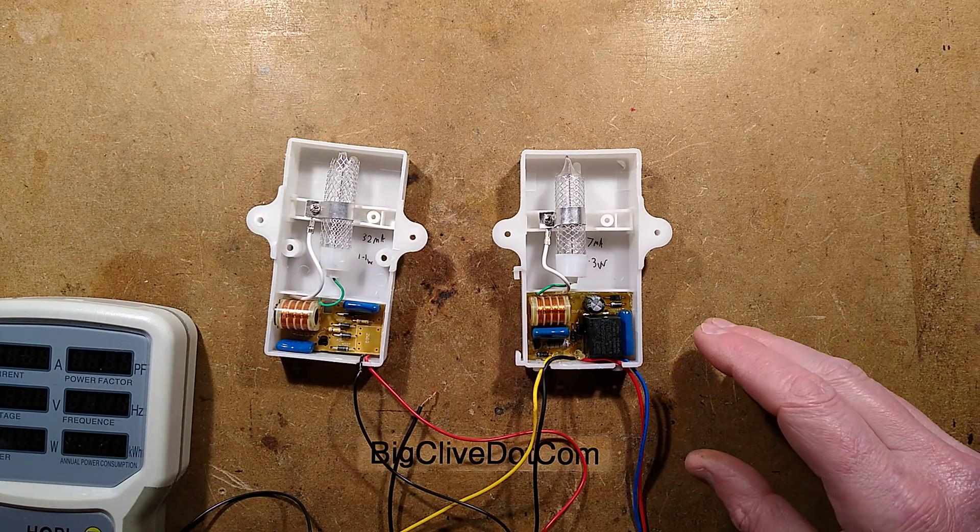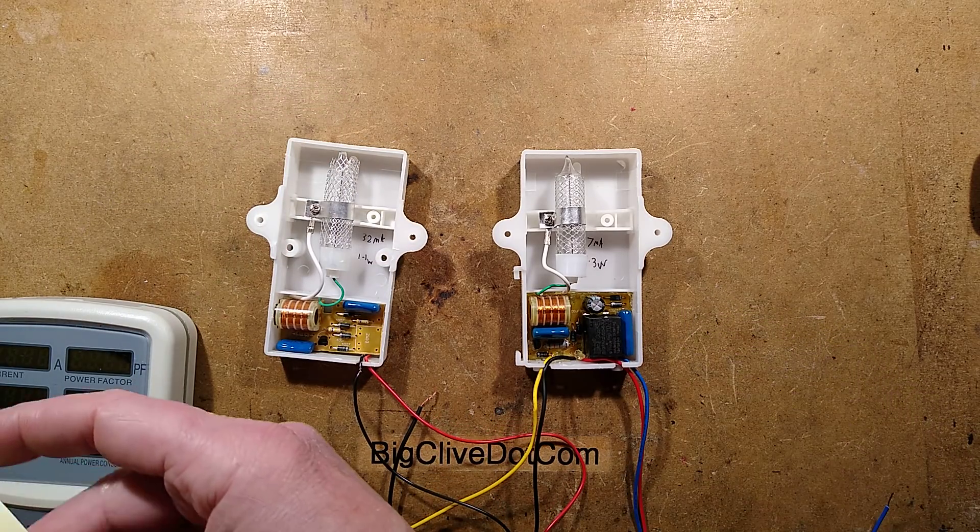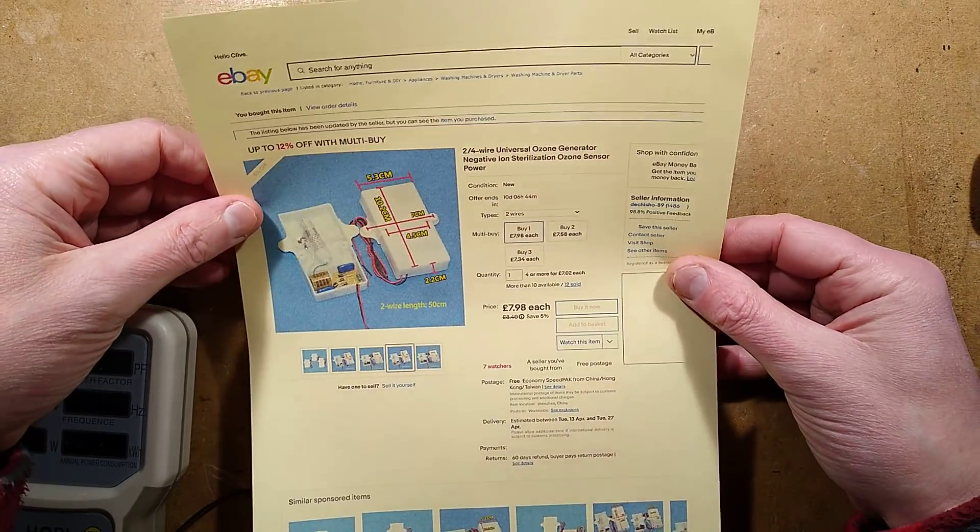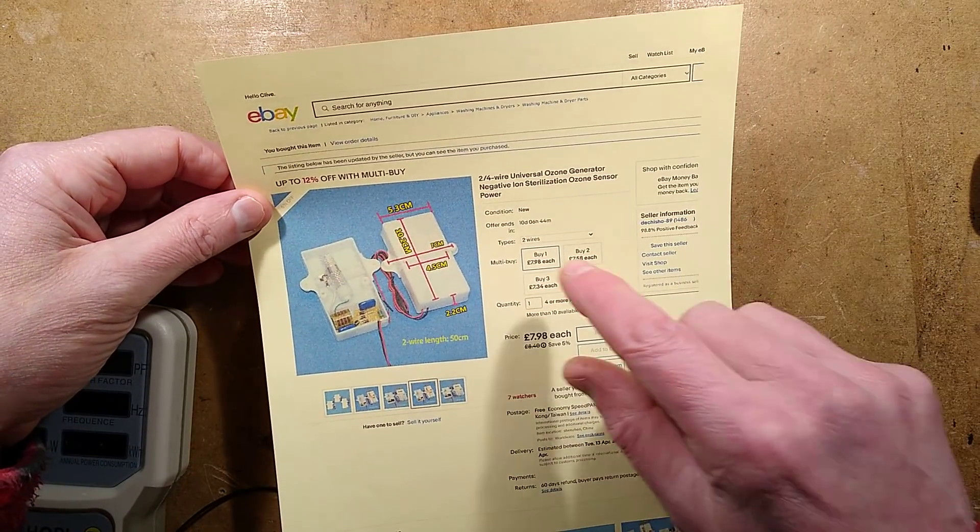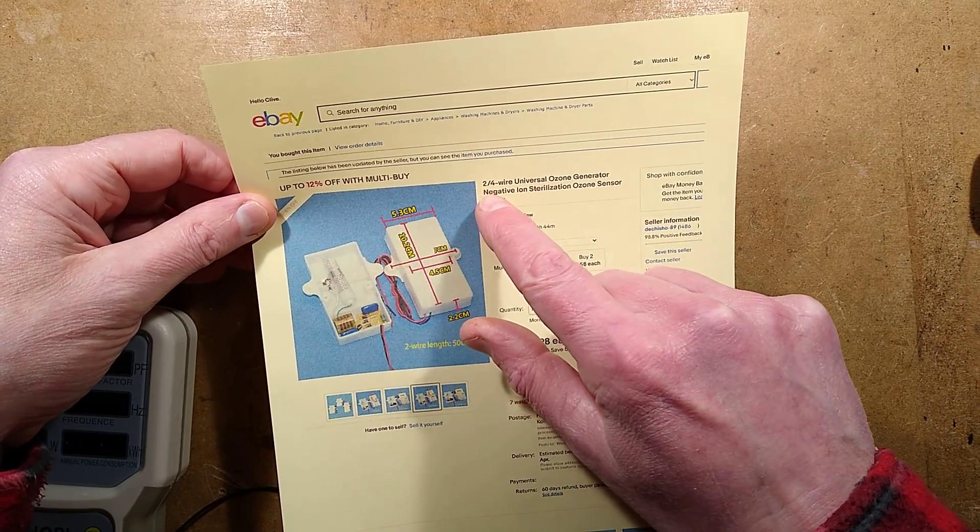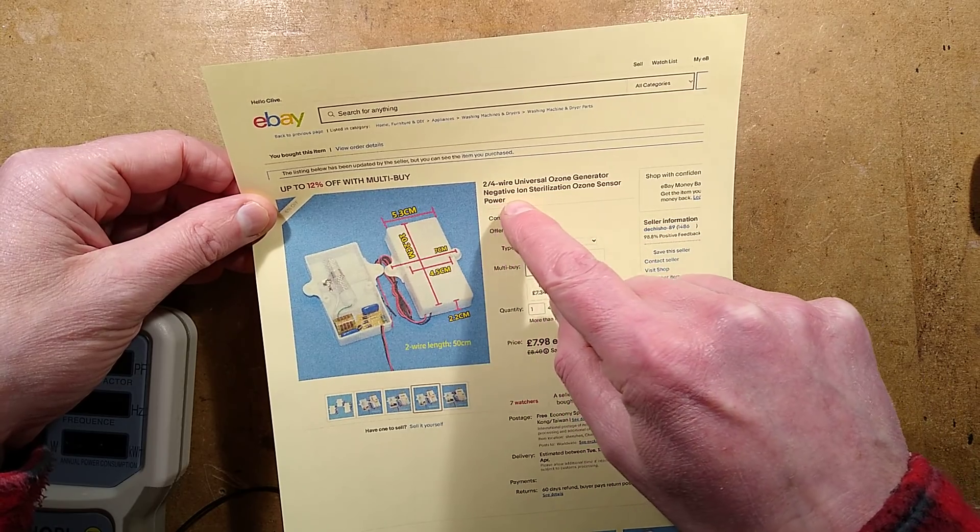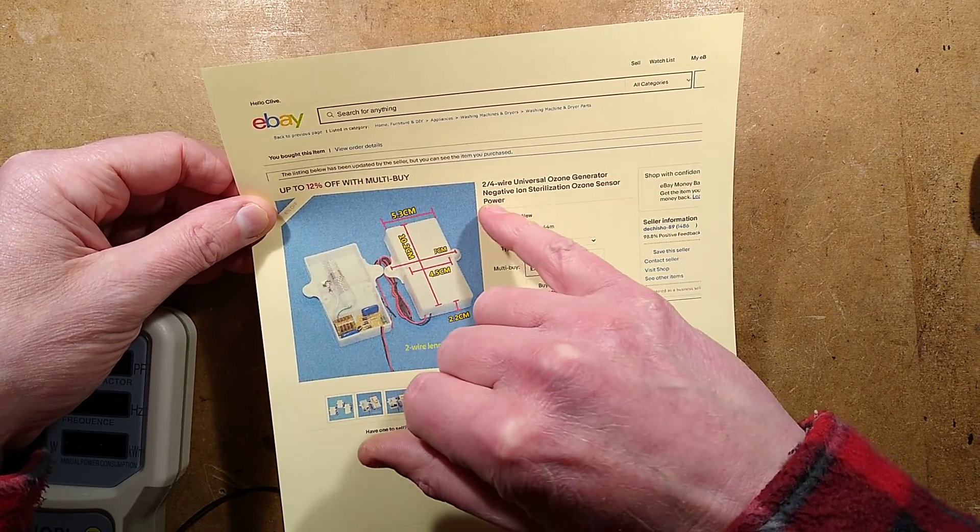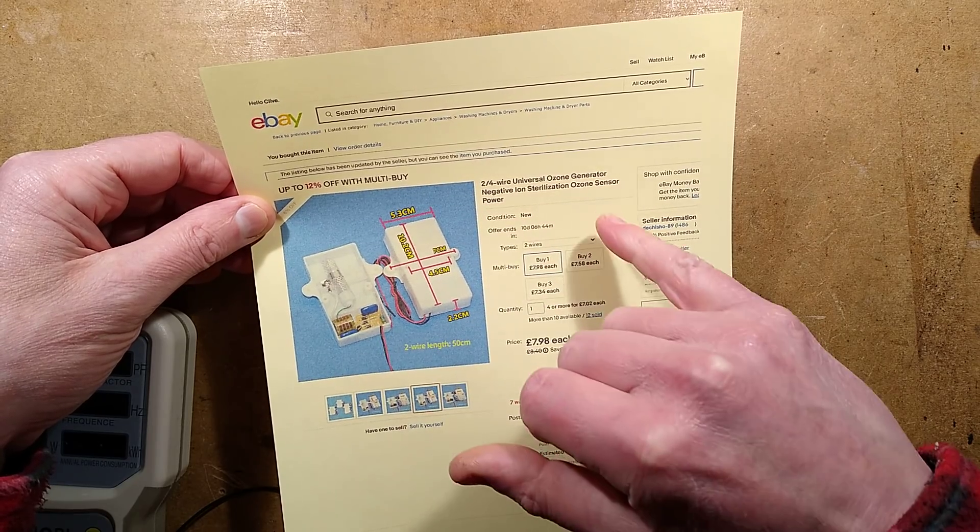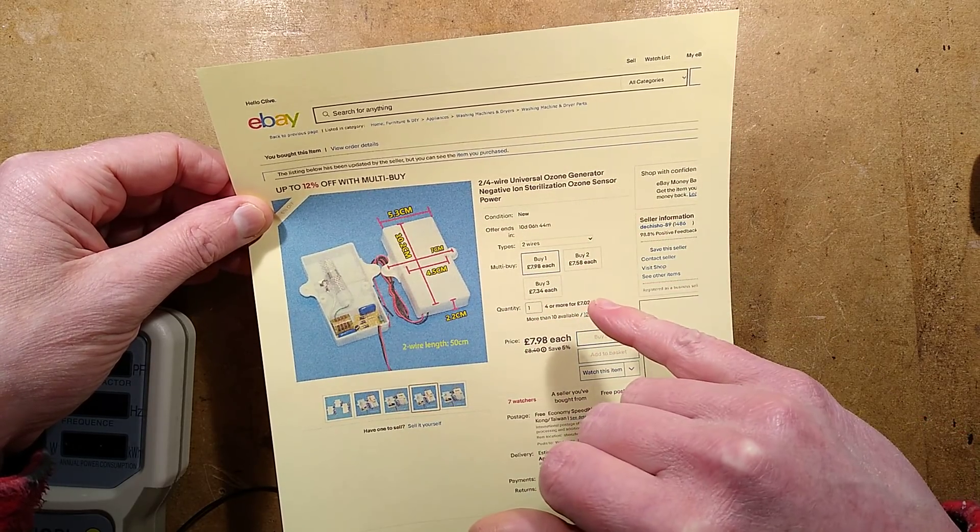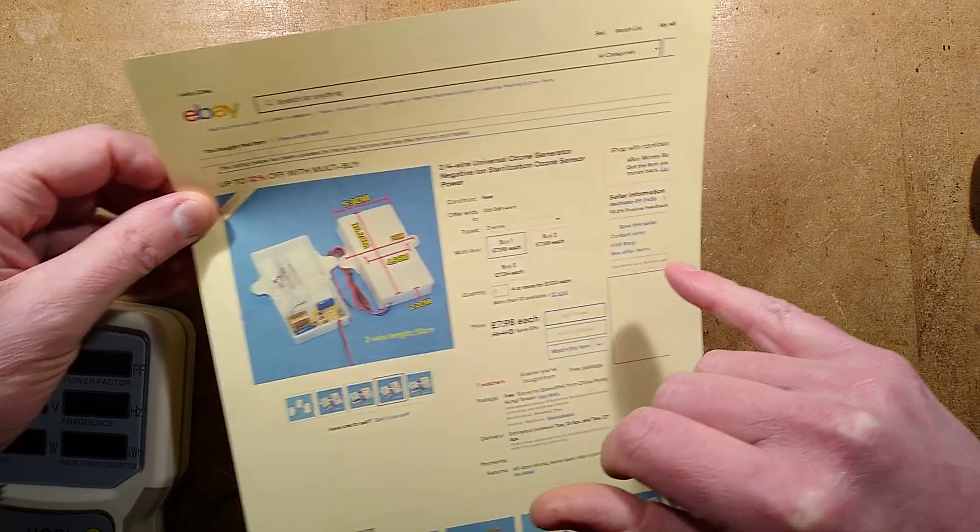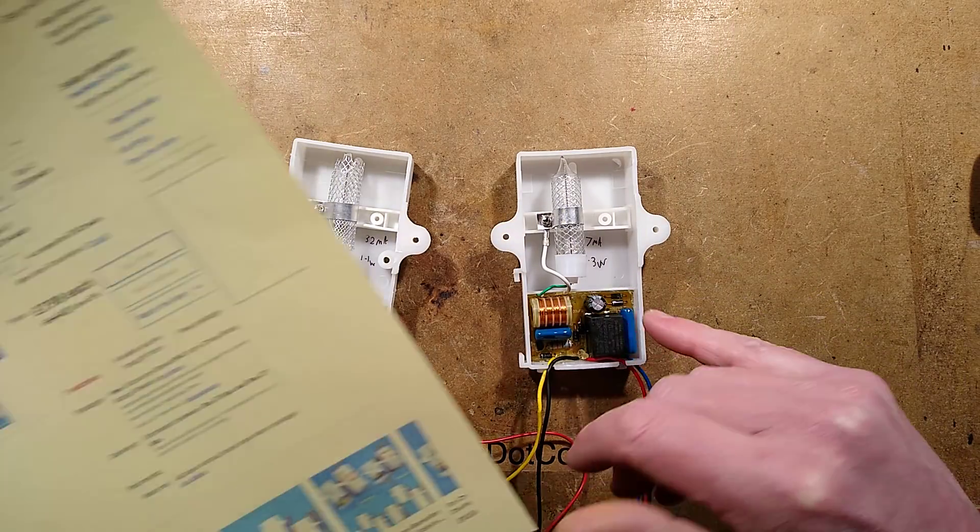It turns out that these may actually be for sterilizing chopsticks, so a very Chinese type of thing. The listing usually says something like two four-wire universal ozone generator negative ion sterilization ozone sensor power. It's nothing to do with negative ions and the sensor I'm not even sure what that's to do with, although having said that this one does have a safety interlock.